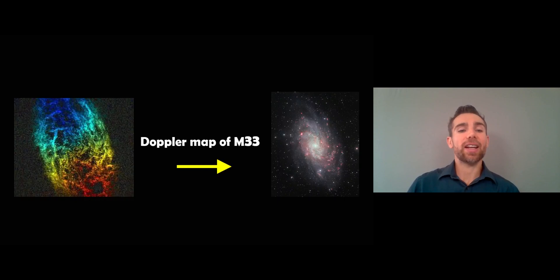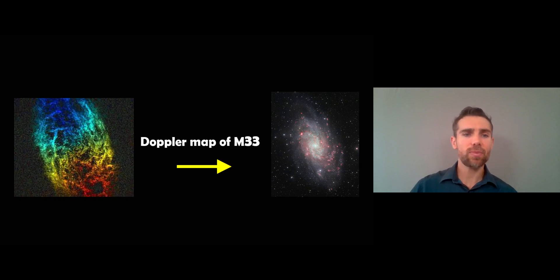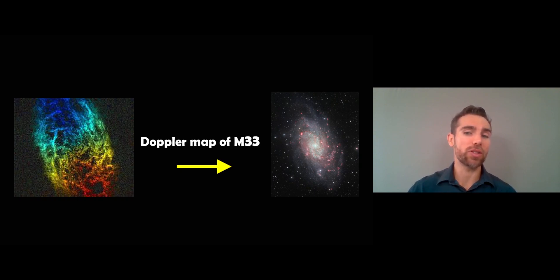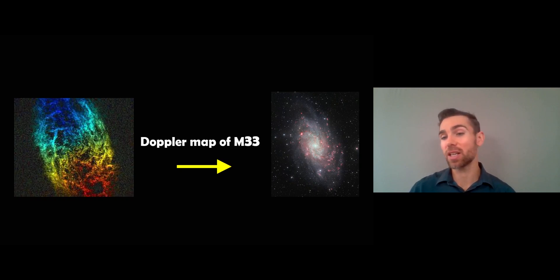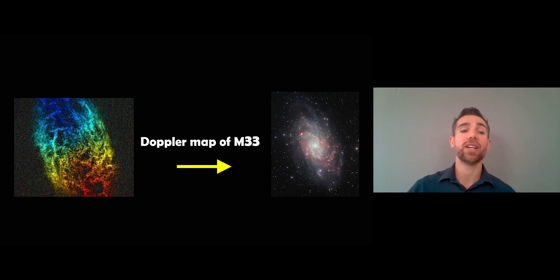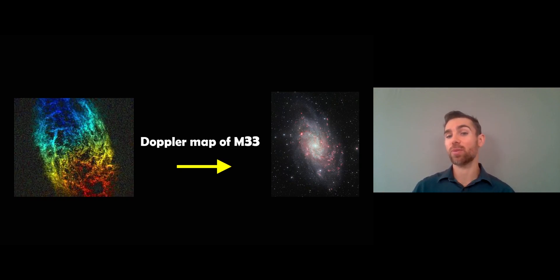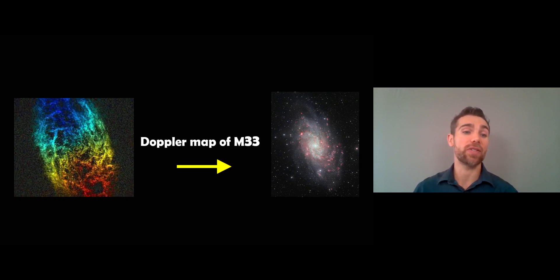This is an example of M33. They've used a Doppler map of that galaxy, and you can see the blue part is traveling towards us and the red part away from us. In the middle it's not moving away or towards us — it's moving perpendicular to our line of sight, so there's no Doppler effect there. You can create these Doppler maps, which give you the rotational velocity through a direct calculation of the velocity from the shift in wavelength of light.